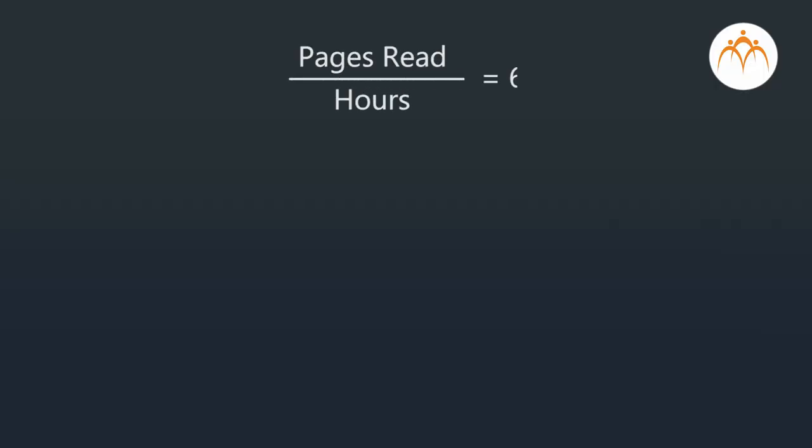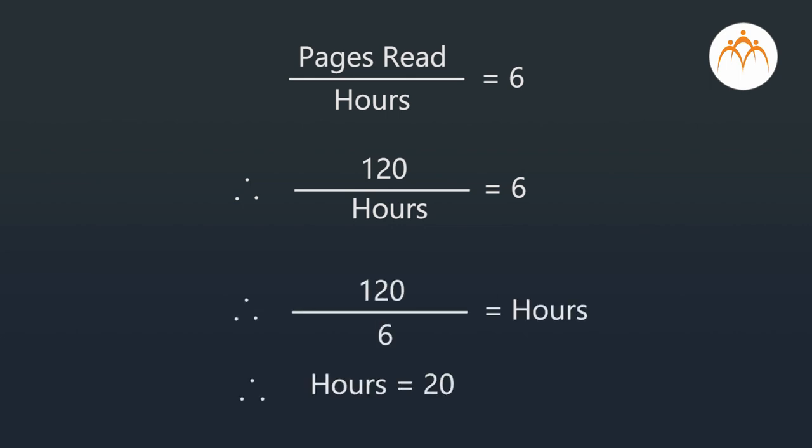Now, if you want to find out how many hours you will require to read 120 pages, how will you do that? We have to find out how many hours are required to read 120 pages. That means pages read divided by hours equals six. So we write 120 in place of pages read: 120 divided by hours equals six. From this, we get hours equals 120 divided by six equals 20 hours. So I require 20 hours to read 120 pages of the book. Absolutely correct — you did it very well.